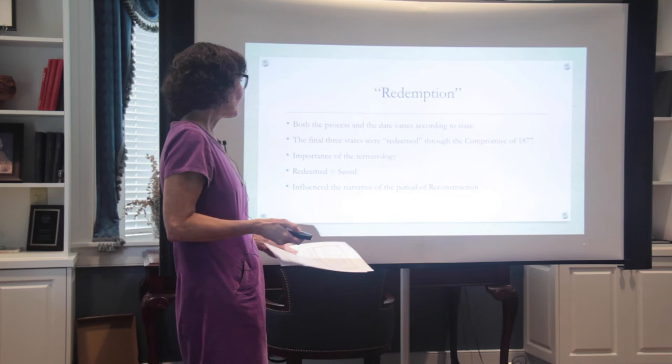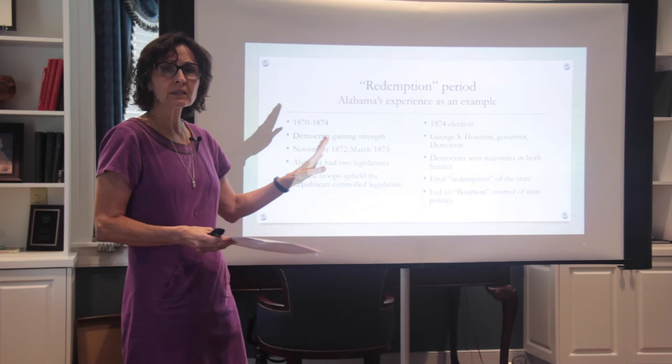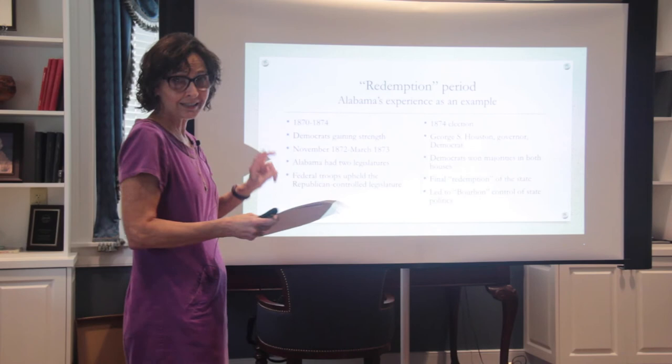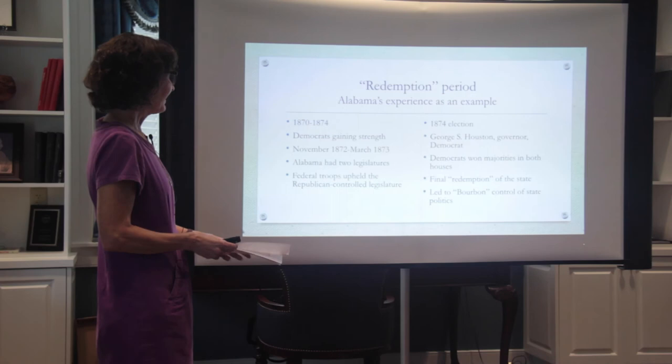This is just an example of what happens in Alabama — it's not a linear road to redemption. There are shifts that ultimately lead to final redemption. It was a mess. Sometimes we think politics is a mess now — it really was a mess in the early 1870s.